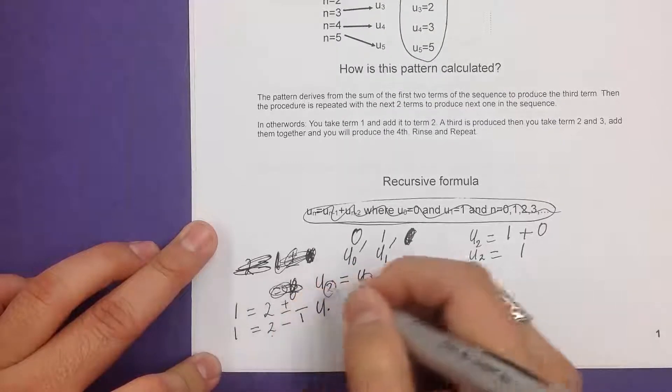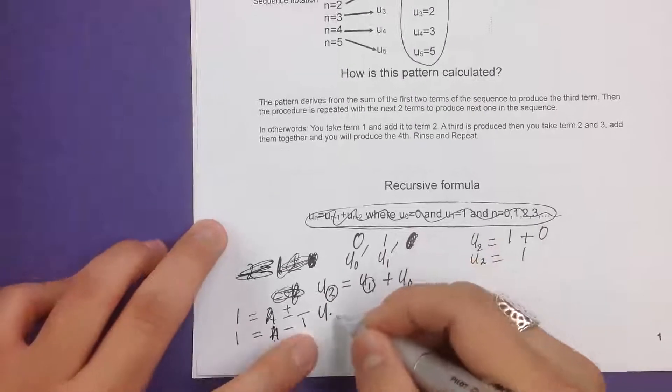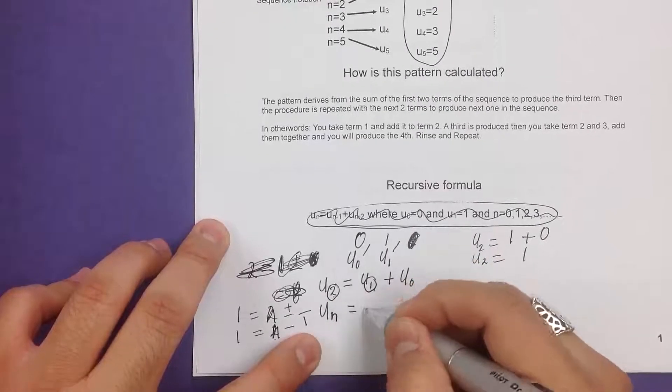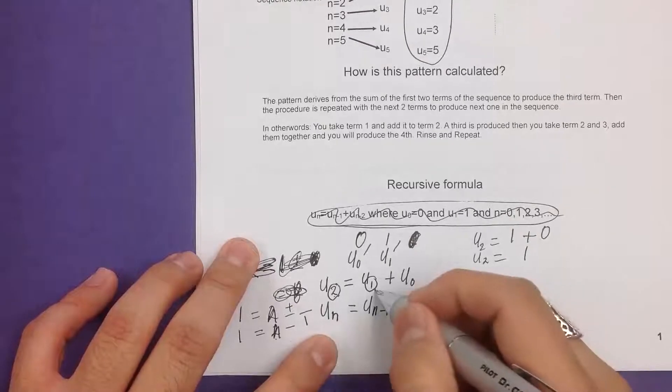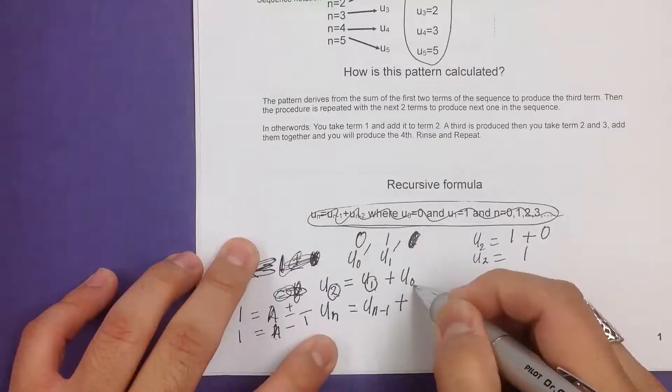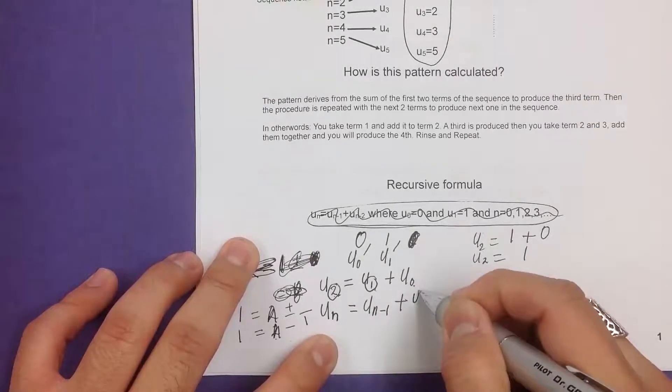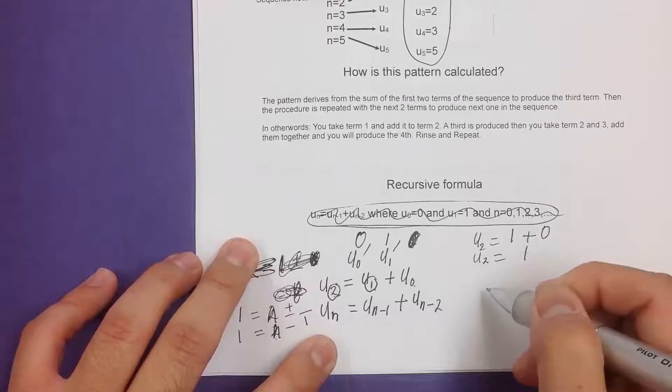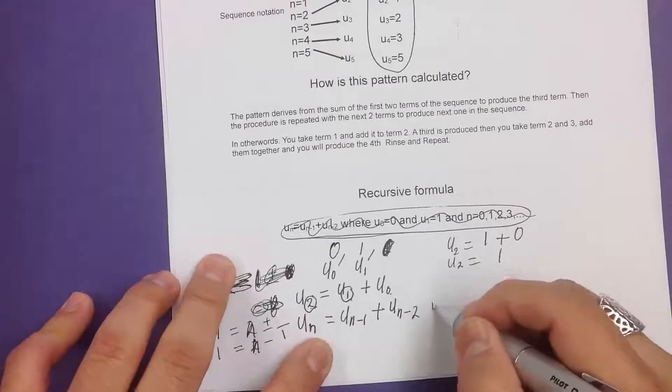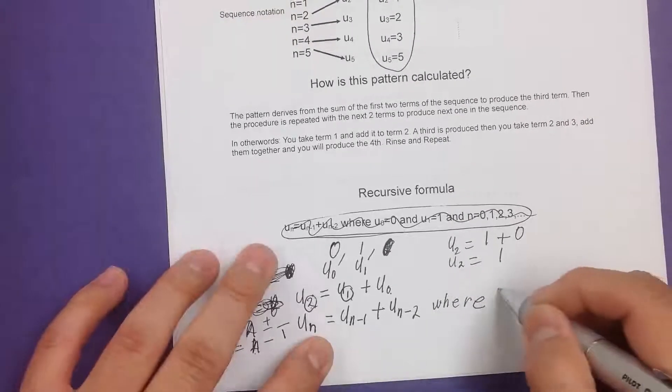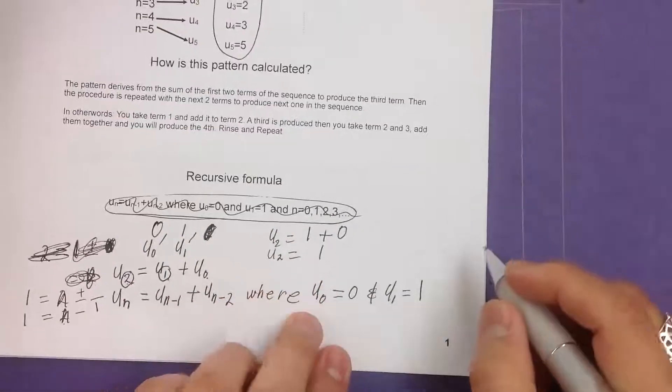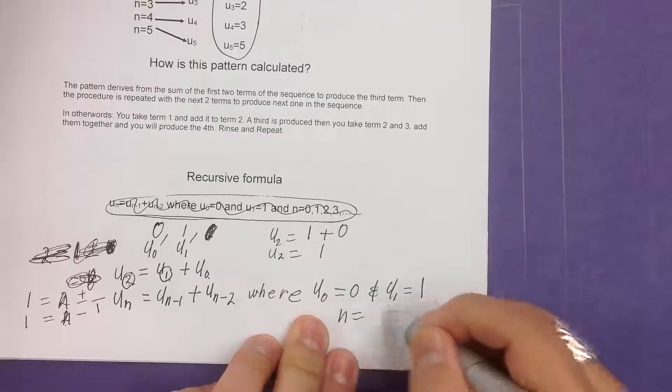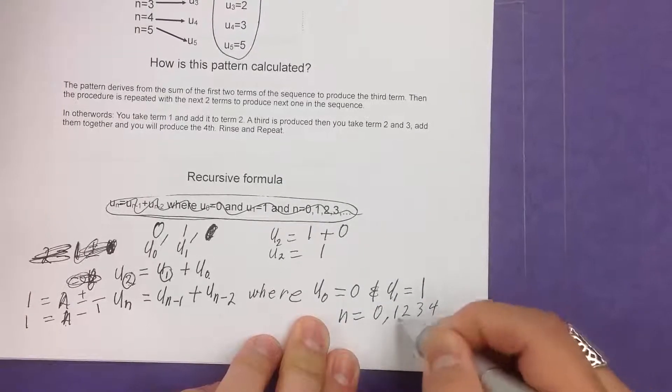I would be replacing the 2 with n. So that tells me right here, u sub n is equal to u sub n minus 1, because right here, since we're going one place back, we're just subtracting 1 from that. And right over here, since we're subtracting, since this is equal to 2, we have to do u sub n minus 2. And this will continue the sequence. And we have to say a couple of things where, because we have a couple of starting points, u sub 0 is equal to 0, and u sub 1 is equal to 1. And we have n equal to 0, 1, 2, 3, 4, and so on and so forth.